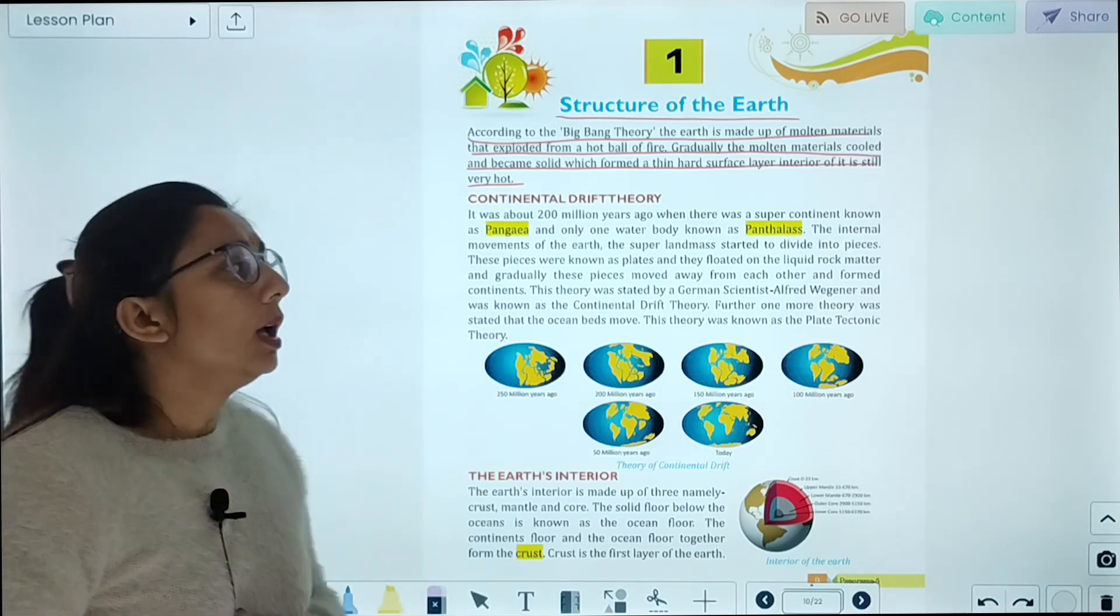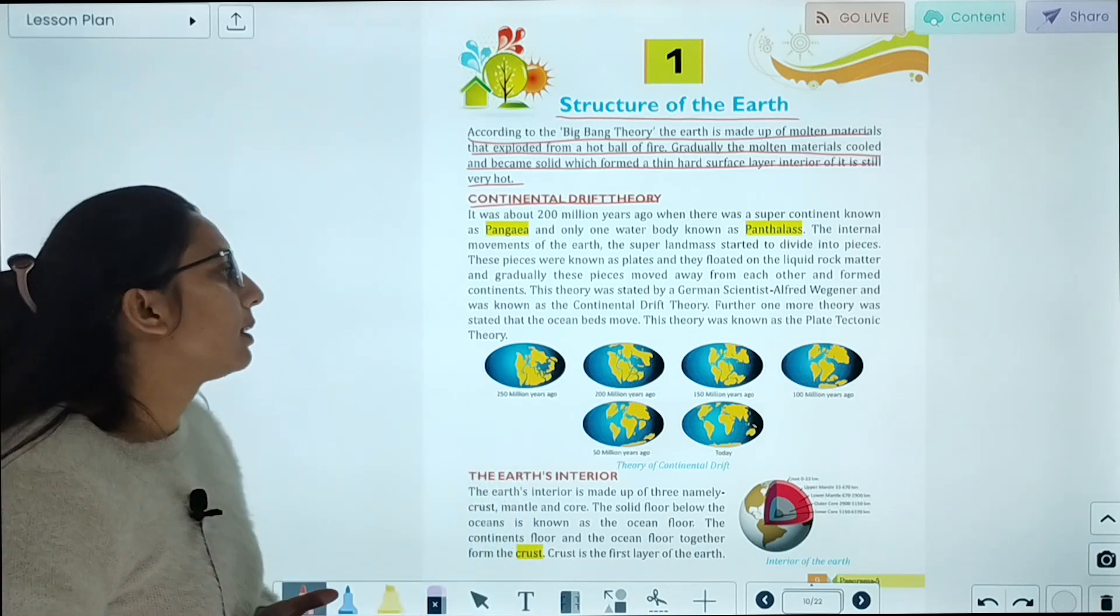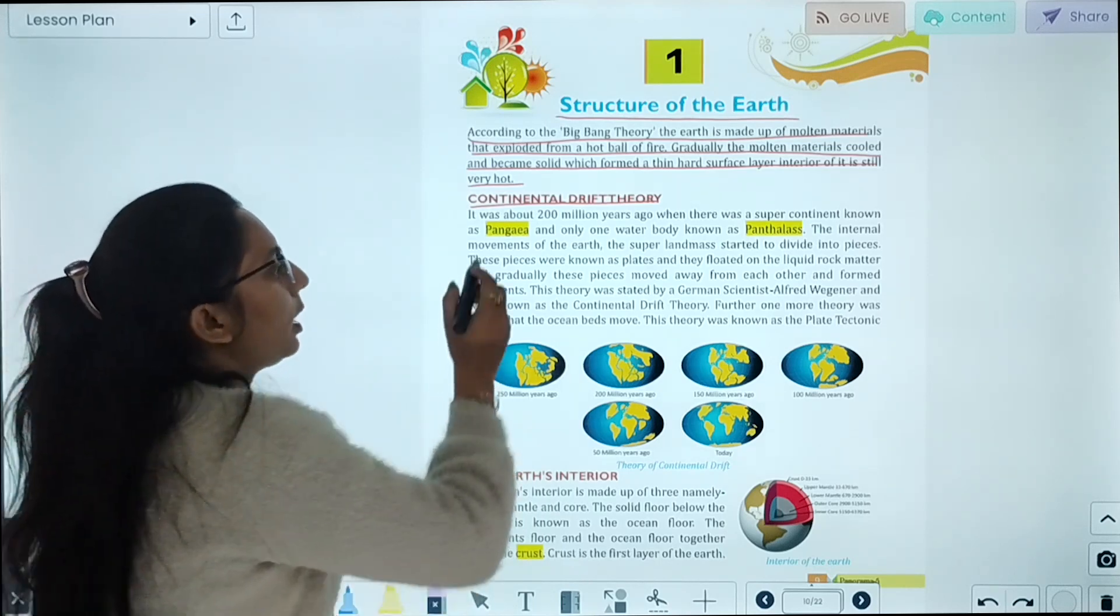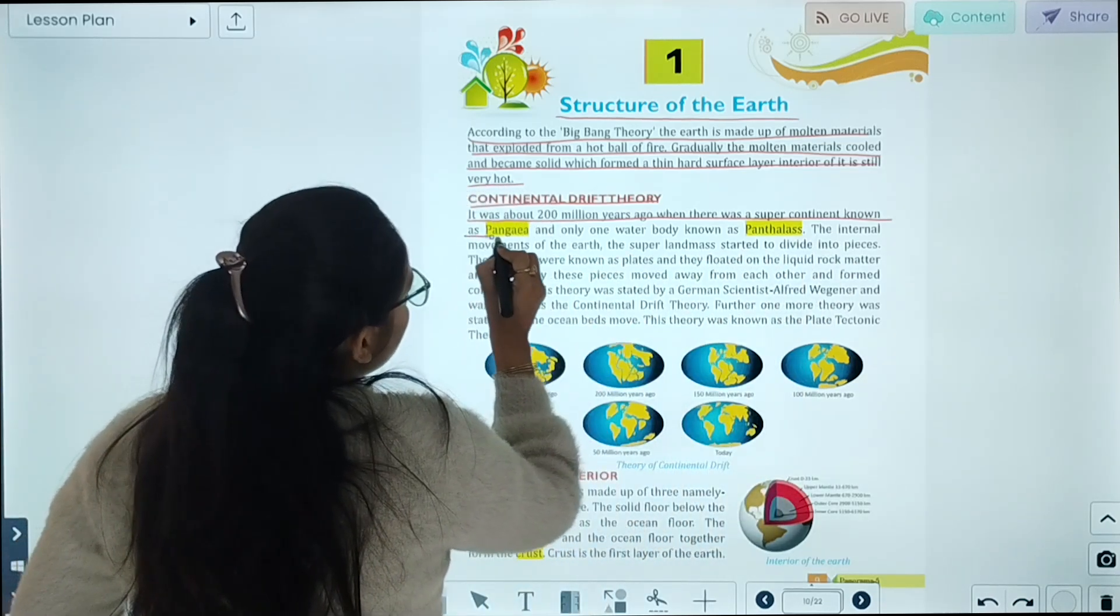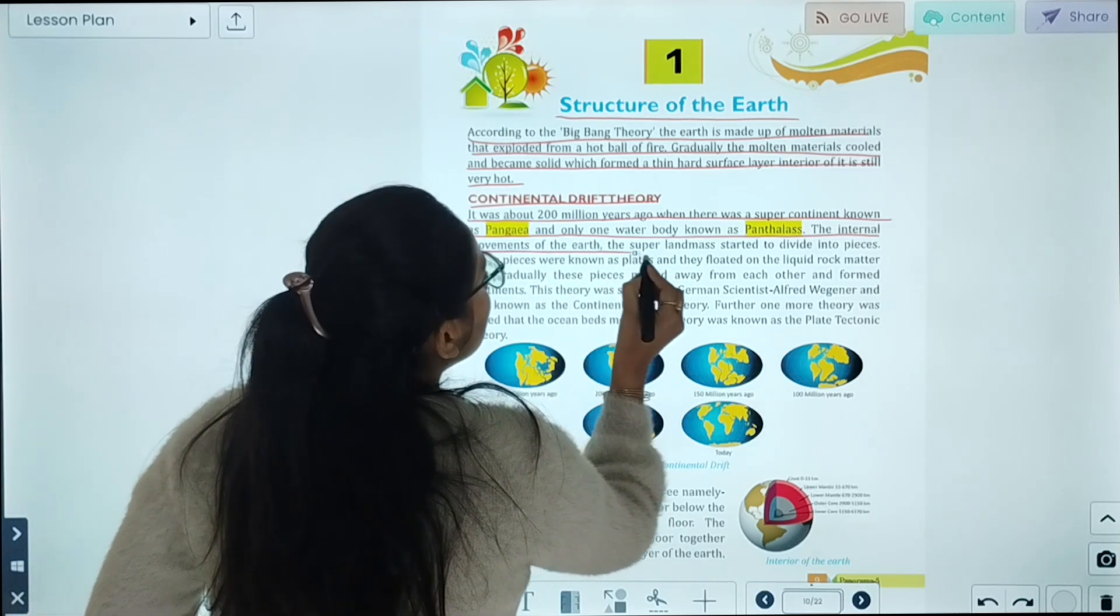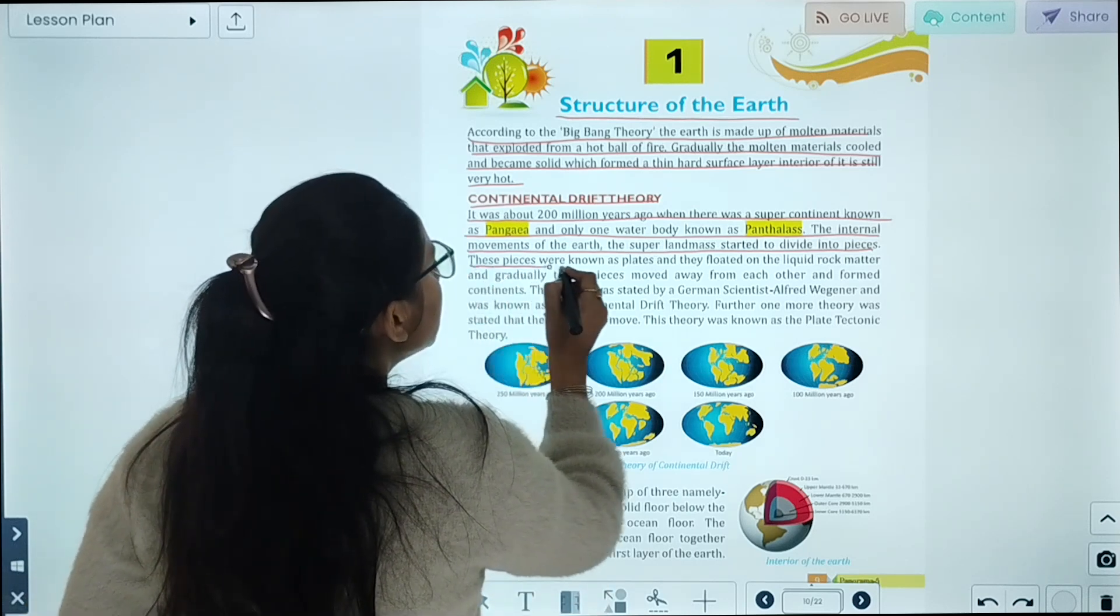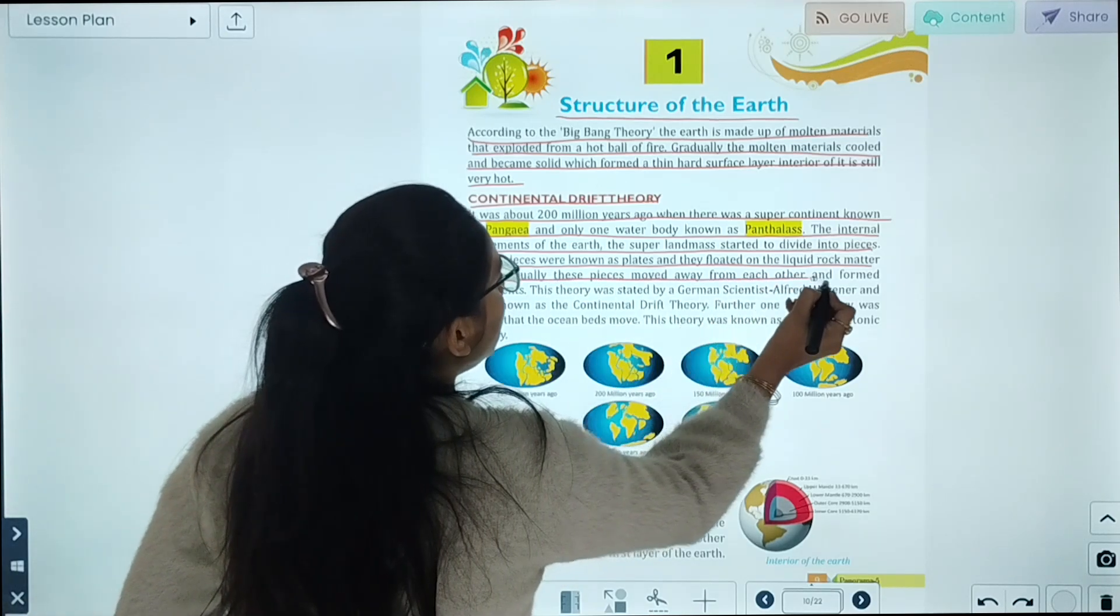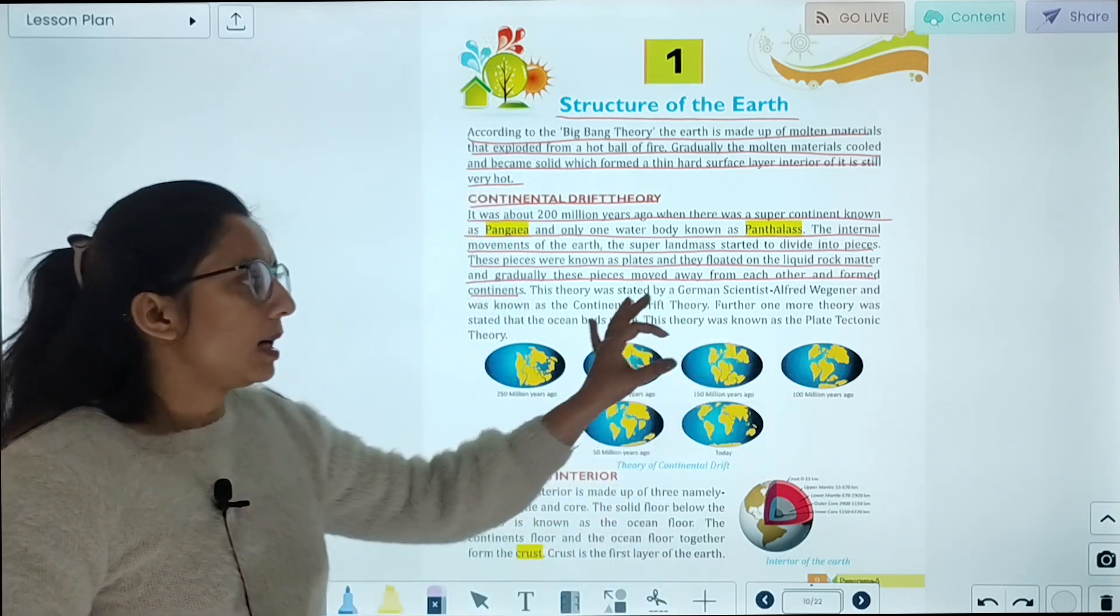Now we will start with the Continental Drift Theory. There was one supercontinent that was known as Pangaea. It was about 200 million years ago when there was a supercontinent known as Pangaea and only one water body known as Panthalassa. The internal movement of the earth caused the superland to divide into pieces. These pieces were known as plates and they floated on the liquid rock mantle. Gradually these pieces moved away from each other and formed continents.